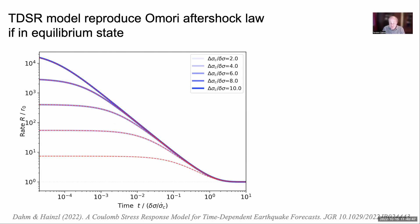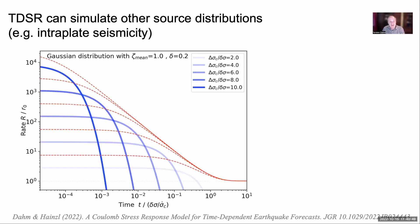However, if we assume a different distribution — for instance, a Gaussian function associated with faults of preferential orientation — then the aftershock prediction changes significantly, as seen here. This might explain, for example, why induced seismicity earthquakes often have different aftershock patterns.